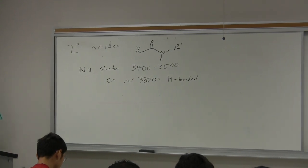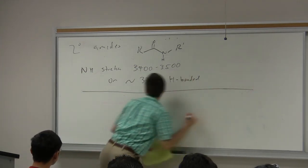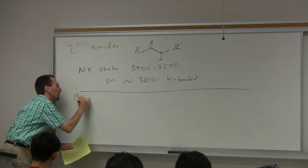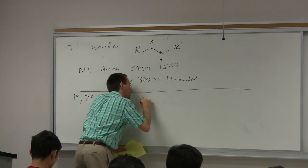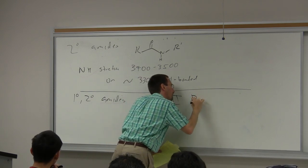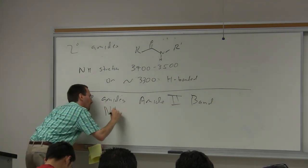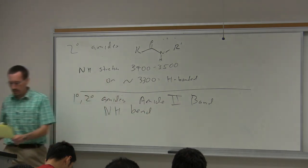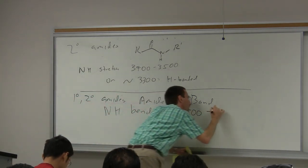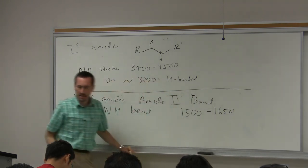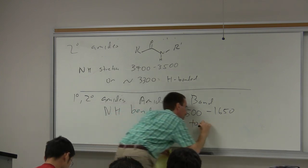In addition to these bands which are called the NH stretch bands, you also have for primary and secondary amides what's called the amide II band. The amide II band is an NH bend, and that typically is on the order of about 1500 to about 1650, and it may fall on top of the amide I band, in which case you wouldn't see it.